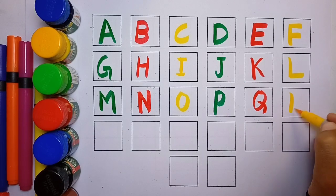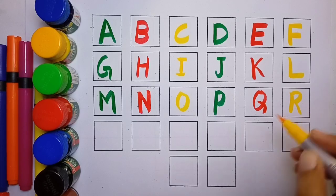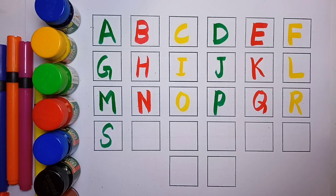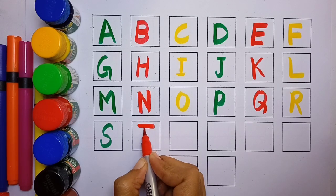R, R for Rat, yellow color. S, S for Sun, green color. T, T for Tiger, red color.